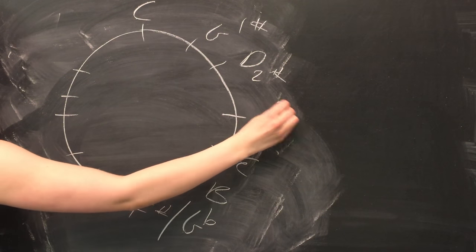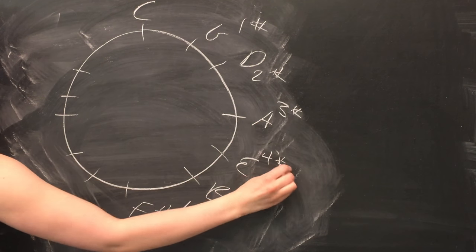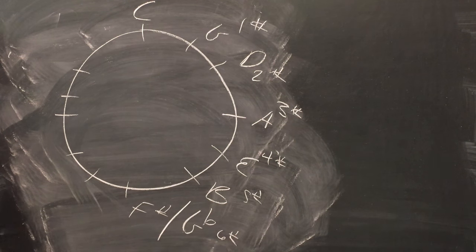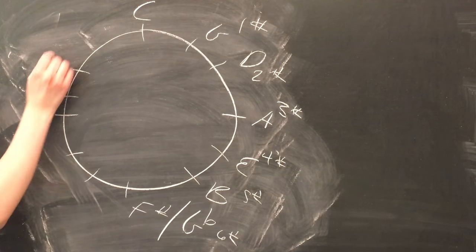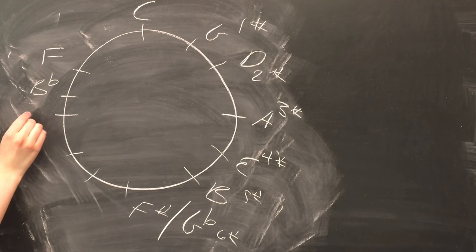G has one sharp, D has two sharps, and so on. Once we get to the bottom of the circle, however, there are so many sharps that we start using flats instead. It helps keep things simple.